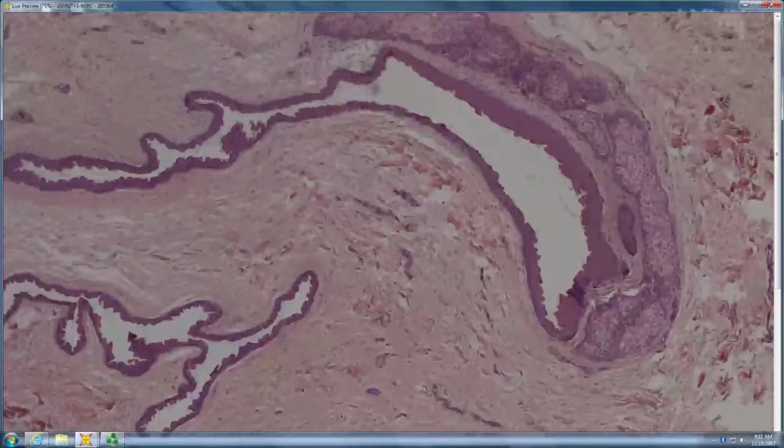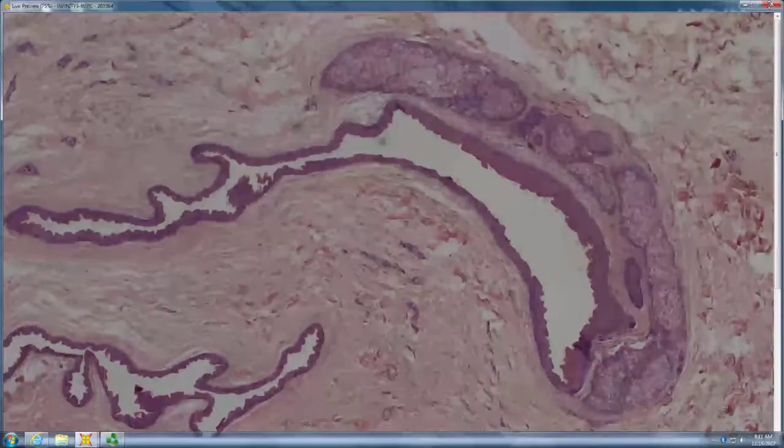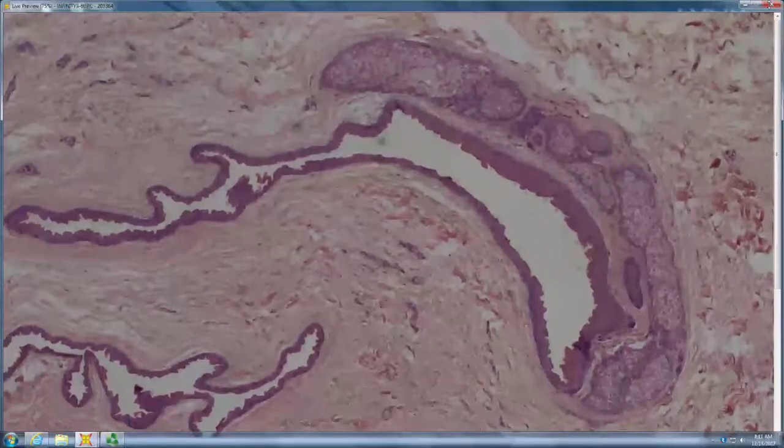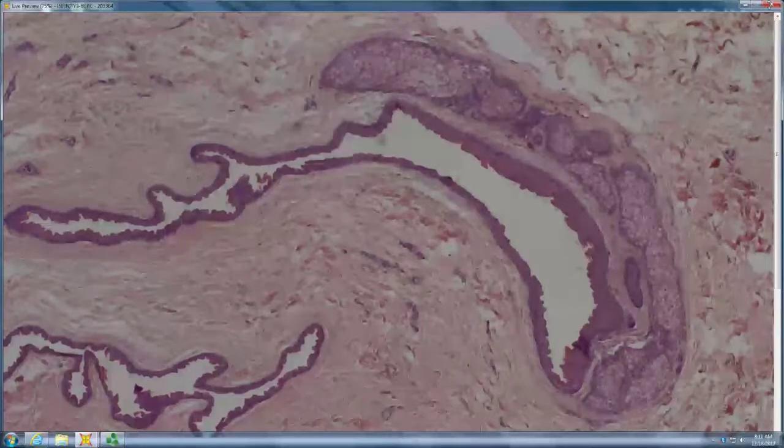Is this like a steatocystoma? Like a steatocystoma. You have the shark tooth lining and the sebaceous glands. Often they're filled with oil. They collapse. They have vellus hairs.